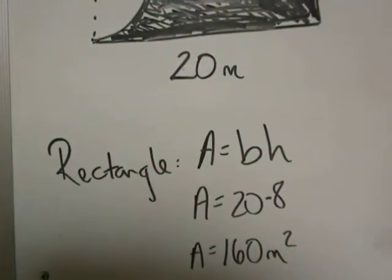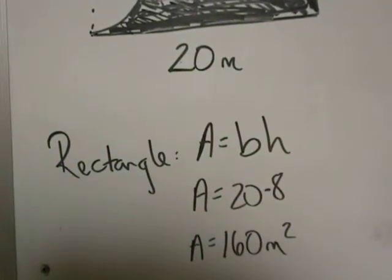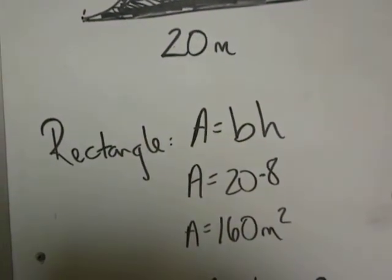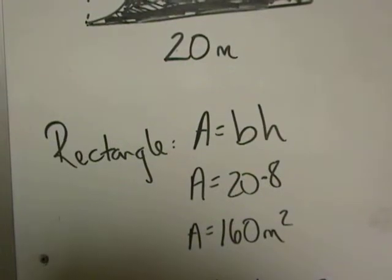To deal with a rectangle, the area is equal to the base times the height, and the dimensions of my rectangle were twenty by eight. Twenty times eight is 160 with a label of meters squared because it's area.